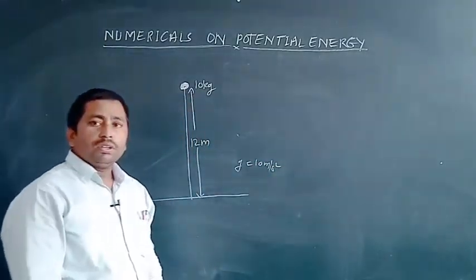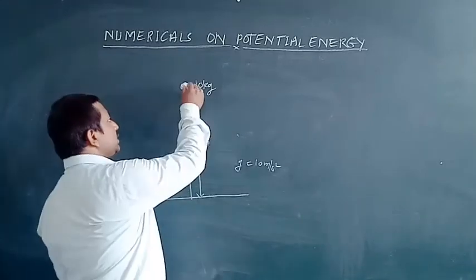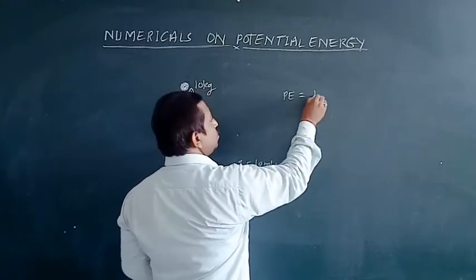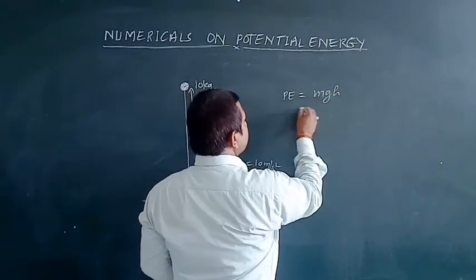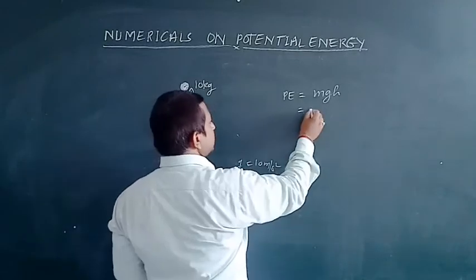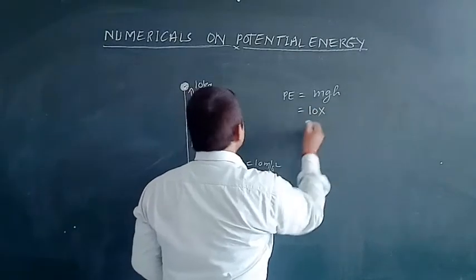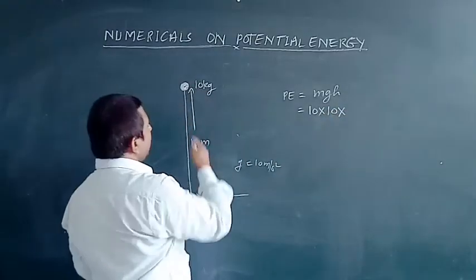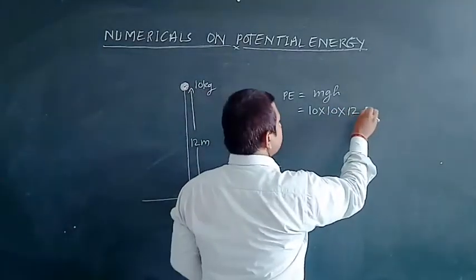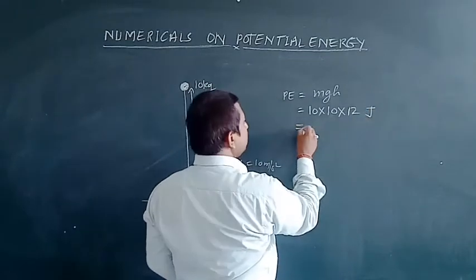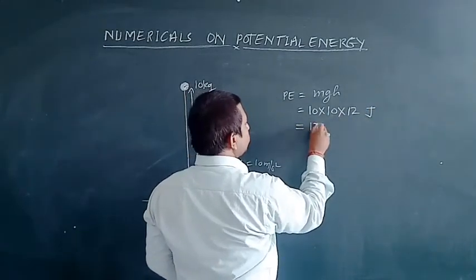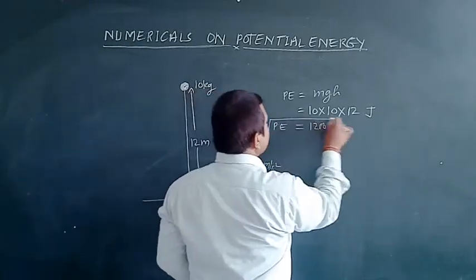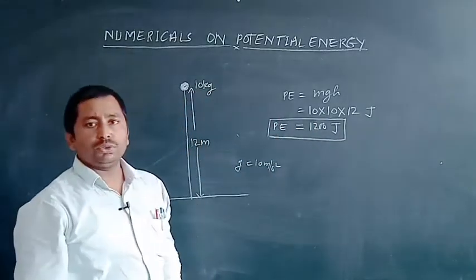To calculate the total potential energy possessed by this object: potential energy = mgh = 10 kg × 10 m/s² × 12 m. So this becomes 1200 joules. The potential energy possessed by this object is equal to 1200 joules.